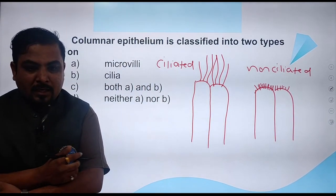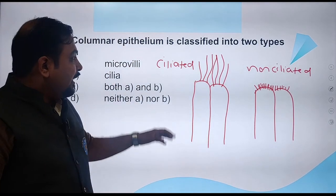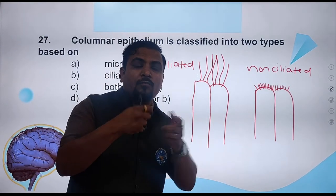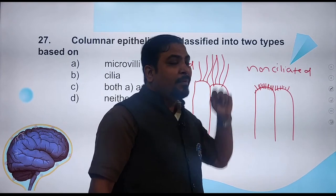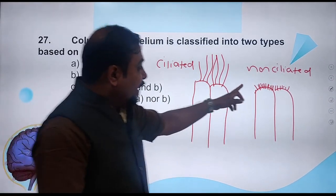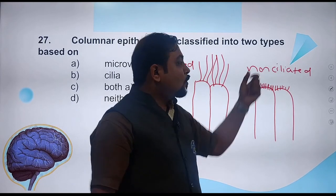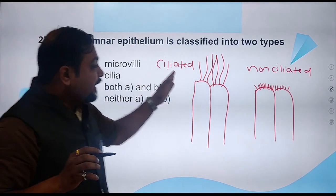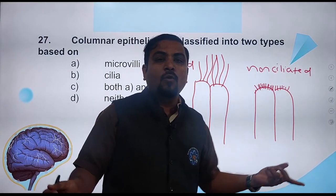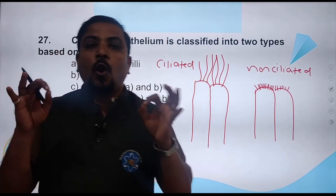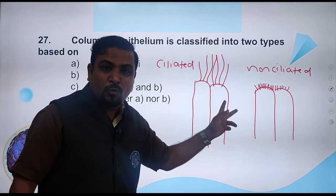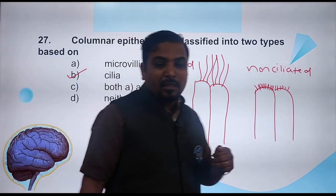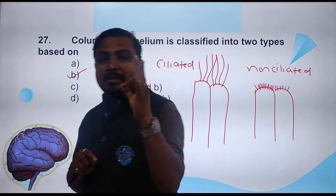Archana asked: does it contain both microvilli and cilia? No, they don't both occur in the same one. One columnar epithelium — ciliated — has cilia. The other columnar epithelium has microvilli instead of cilia, so it is non-ciliated. Simple logic: if cilia are there it is ciliated; if cilia are absent it is non-ciliated. This classification is on the basis of cilia. So the right answer is option B.